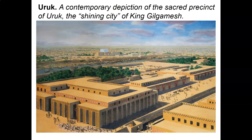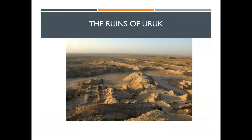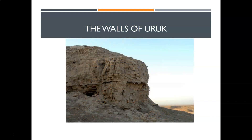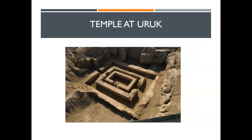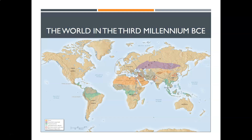Here are some more images of the city of Uruk and what the ruins look like today. Humans build in straight lines and nature doesn't — you can see the walls, and you can see the outlines of the bricks, which tells you something. If they have walls, it's to keep people out — for defensive purposes. This also tells you that increasingly you're going to get larger and larger scale warfare as people, cities, and states fight over resources and trade. Here's another picture of an excavated temple from the third millennium.